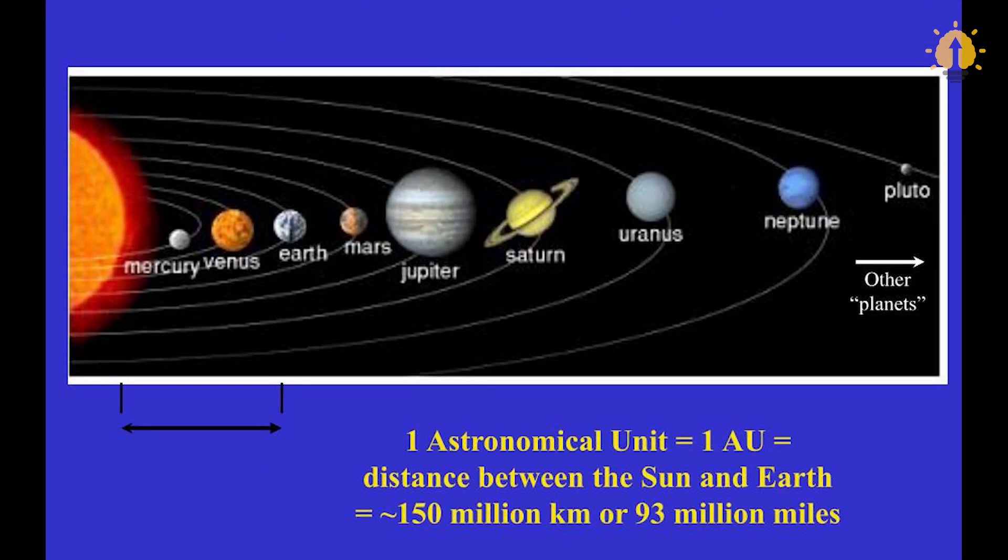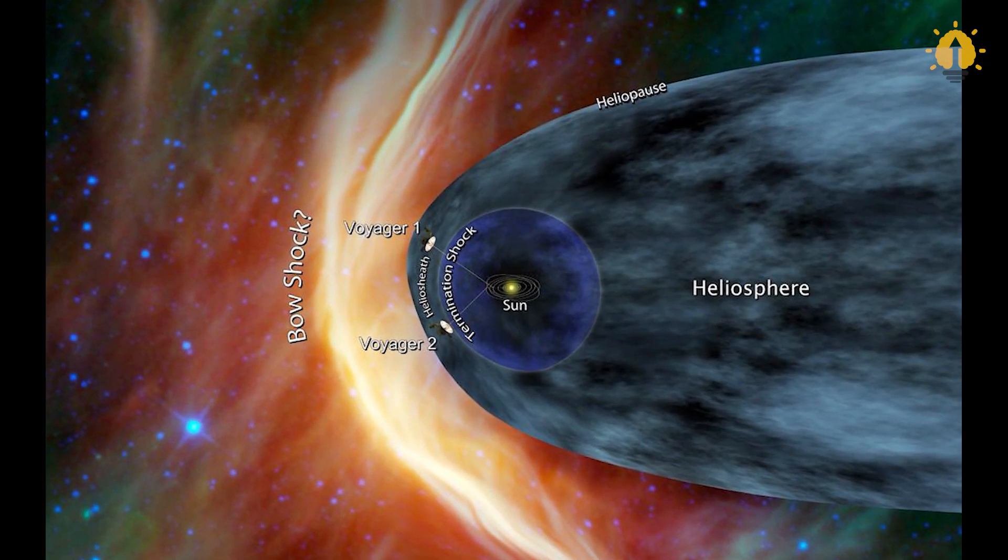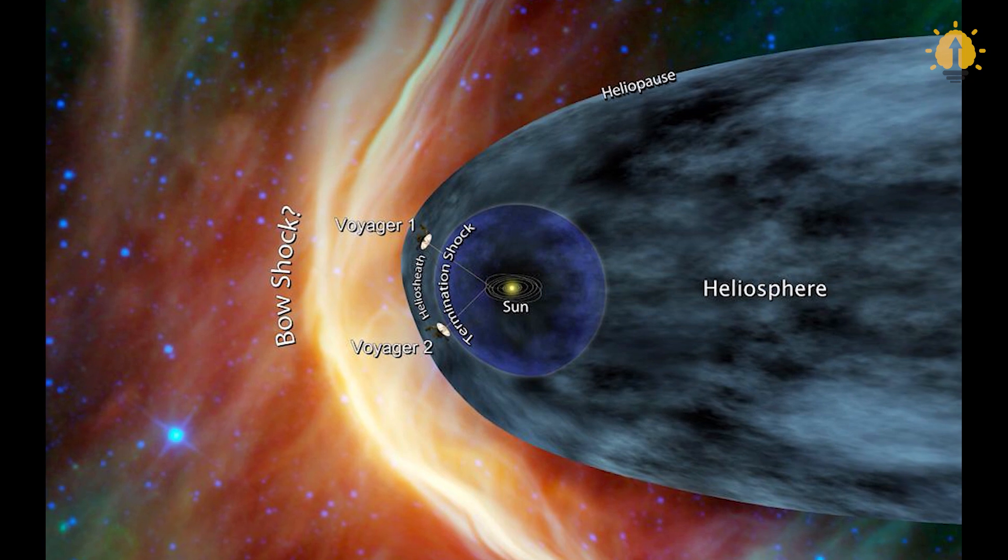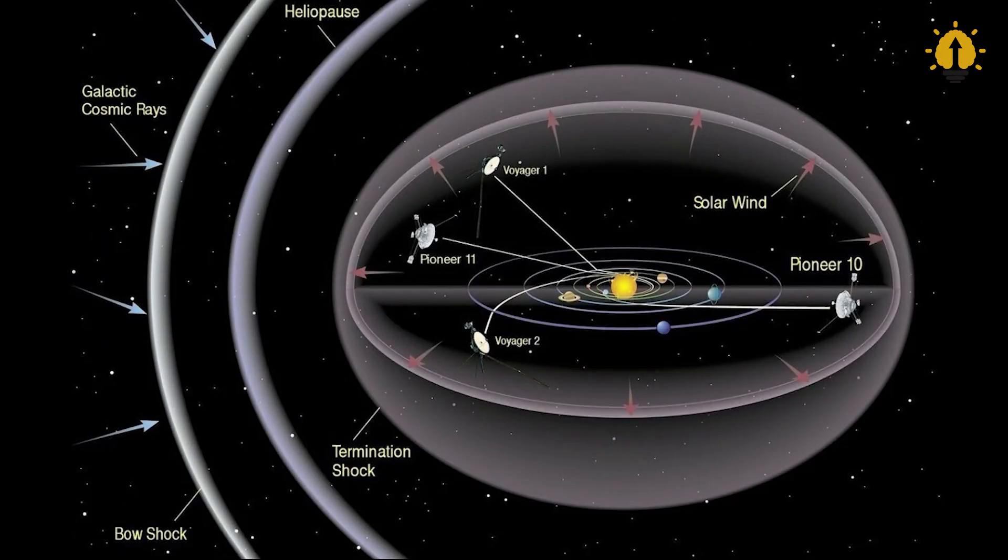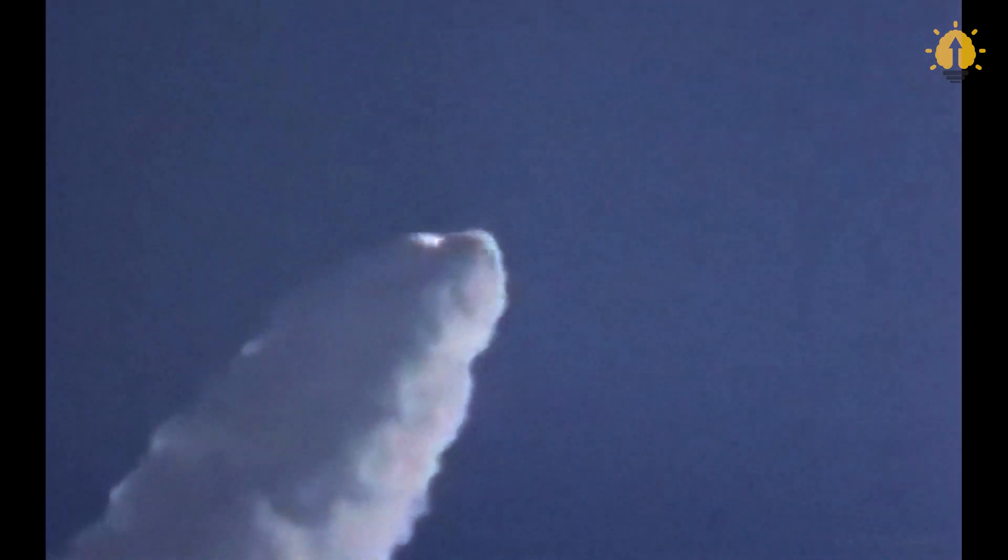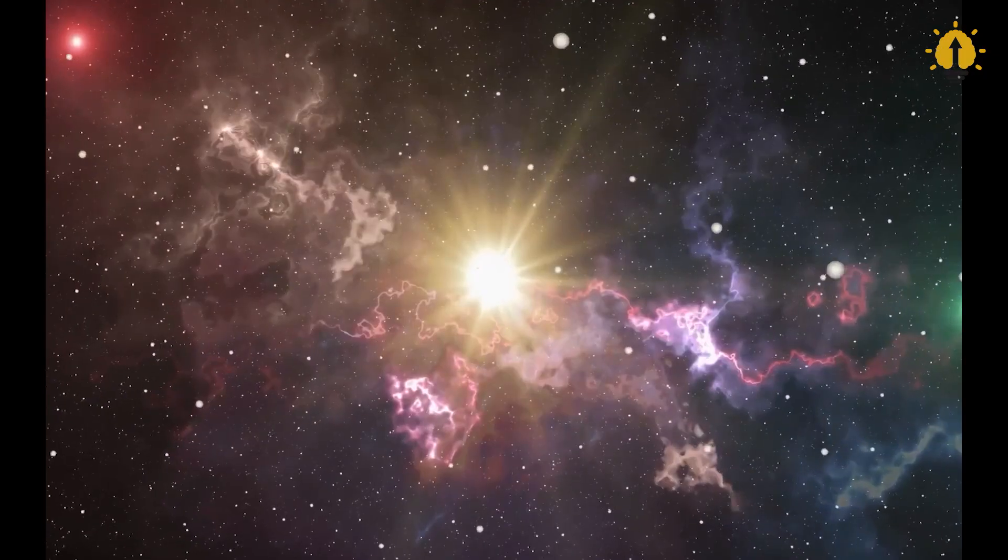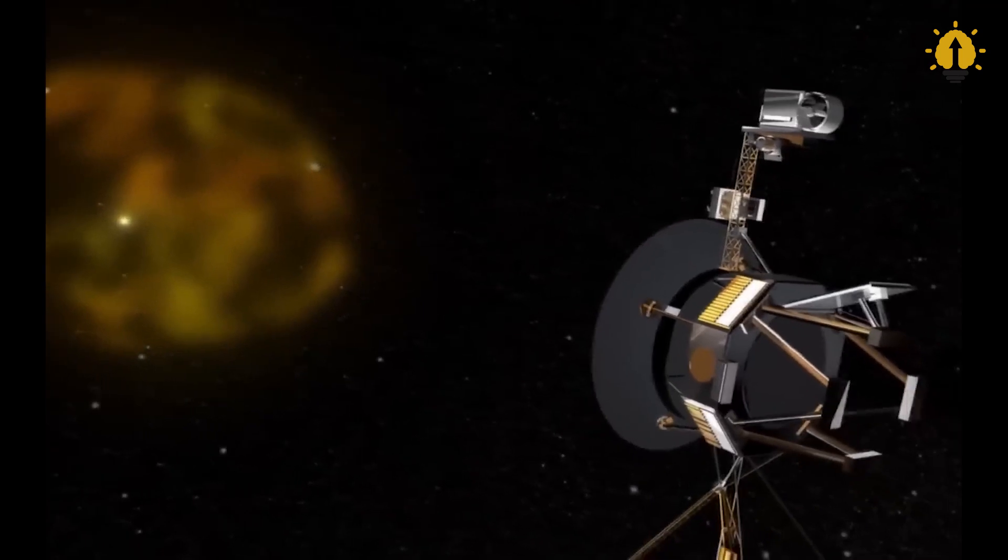To put this into perspective, one astronomical unit is roughly 93 million miles, the distance between the Earth and the Sun. Gurney's projections turned out to be remarkably accurate as Voyager 1 reached the Heliopause about 20 years later and detected the expected rise in plasma density. However, it posed a puzzling question.